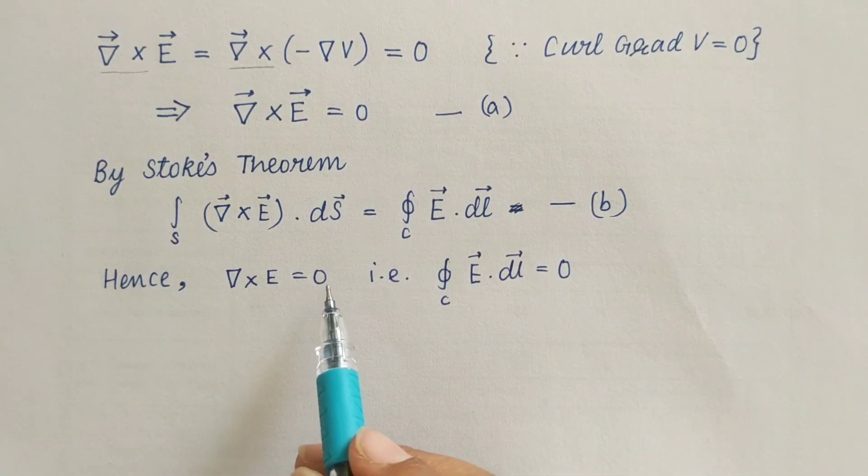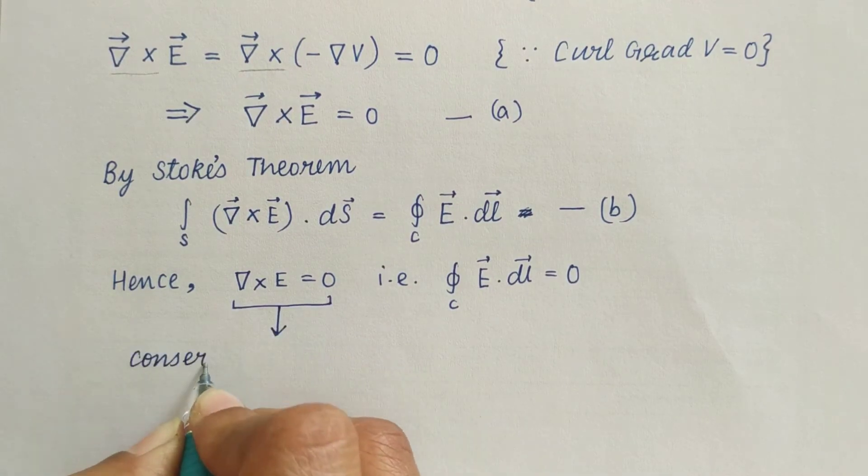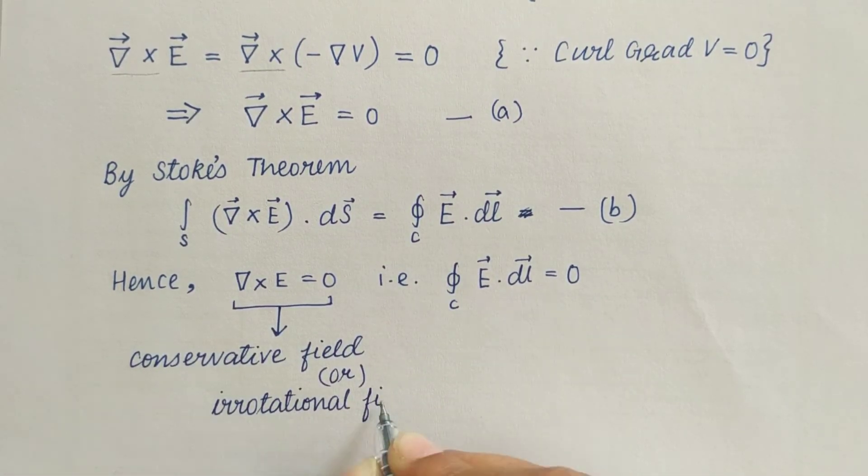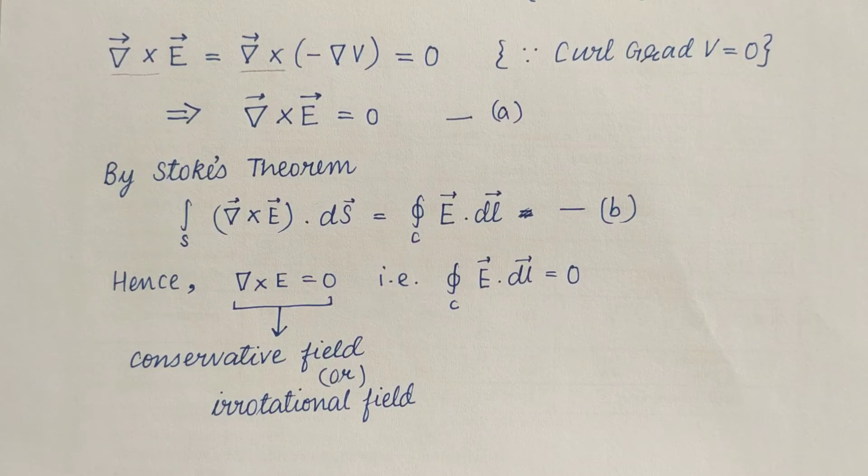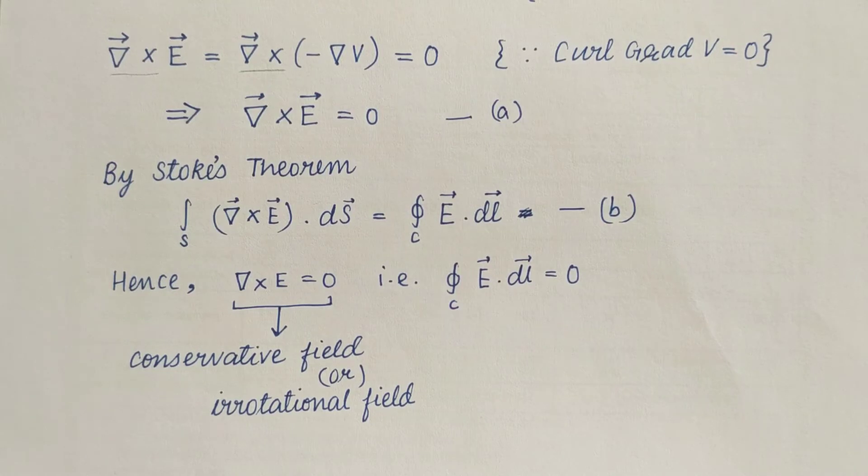Hence del cross E equals zero, that is E dot DL is also zero. This del cross E equals zero means conservative field or irrotational field. Line integral of electric field is independent of the path. It does not depend upon the path. It is directionless value, hence depends only on its location.